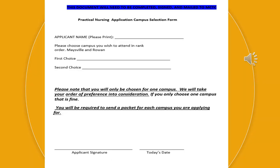This campus selection form applies if both PN programs are starting at the same time. Check with your advisor to confirm start dates, as the campuses will likely be on different semesters. This form is included just in case both programs start in the same semester.